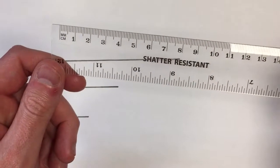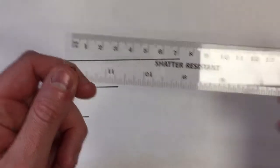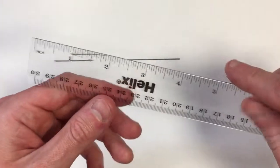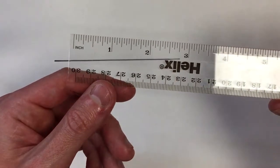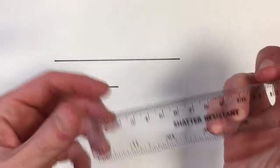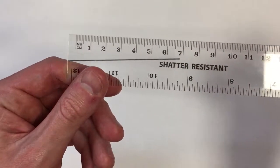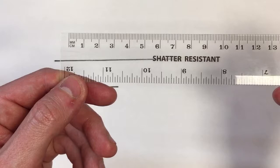I'm going to show you how to use a ruler to measure the length of a line. Most rulers have two sides to them. One side is for measuring in inches, and the other side is for measuring in centimeters and millimeters. We're going to be measuring in centimeters.